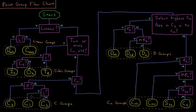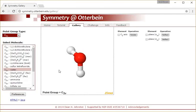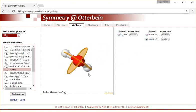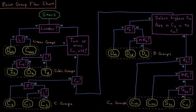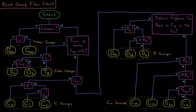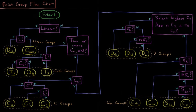So one quick practice that we'll go through here. If I have the water molecule, I have a C2 and two sigma Vs there. So if I ask the questions about water, is it linear? No. Does it have two or more Cn's of n greater than 2? Well, its principal axis is C2, so no.